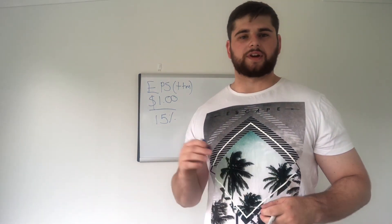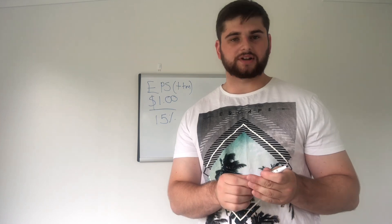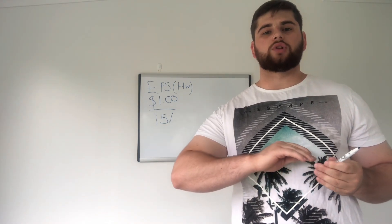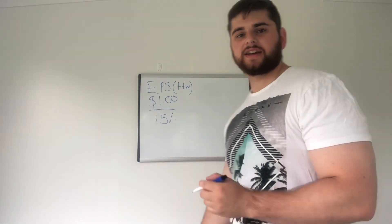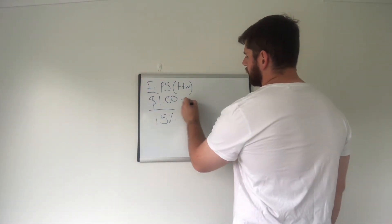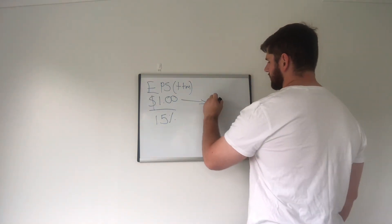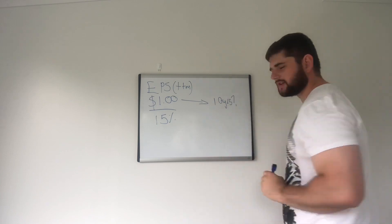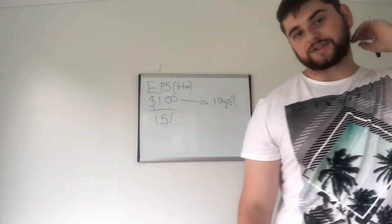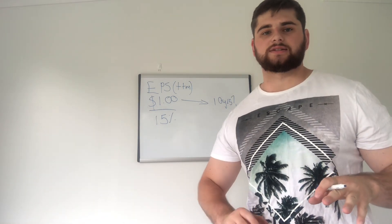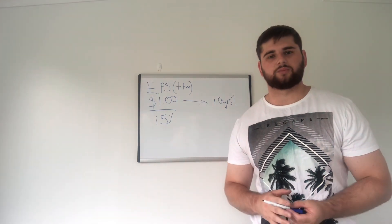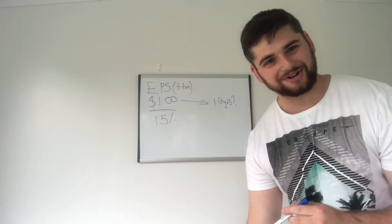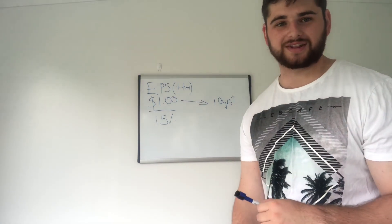All right, so we're assuming the company is going to grow at 15% a year, and for this particular valuation I'm going to look over the next 10-year period. So I need to figure out what $1 of earnings turns into in 10 years' time. If we grow that $1 at 15% a year for 10 years, what are we going to end up with? To do this you can use a spreadsheet, a calculator, whatever's easiest. Personally, I'm going to use the rule of 72 — if you've watched one of my videos before, you've probably seen that. I use it just about every video.